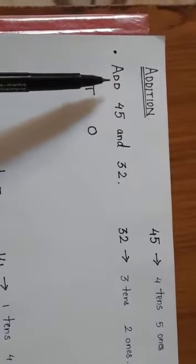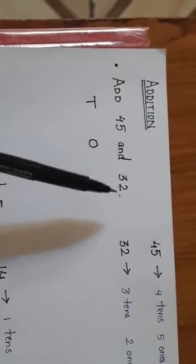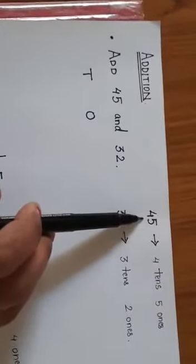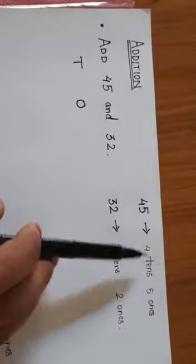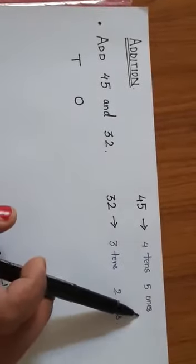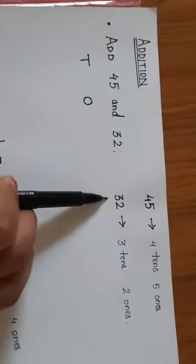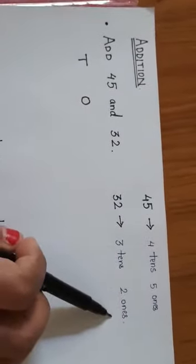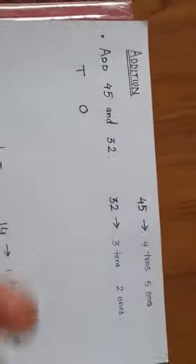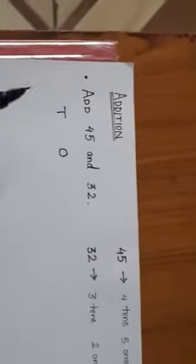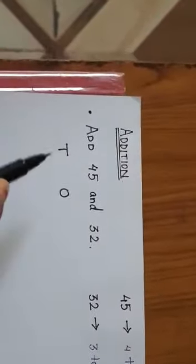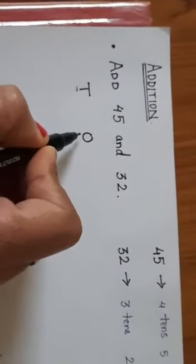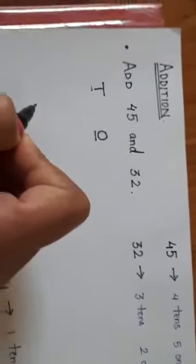So this first question, can you see, add 45 and 32. Now as we know the expanded form of 45, what is 4 tens and 5 ones? What is 32 expanded form? 3 tens and 2 ones. Now you know there are two houses. How many houses are there? Two houses. One is tens, how do we write? We denote it by T and one is ones. We denote it by O. Okay?